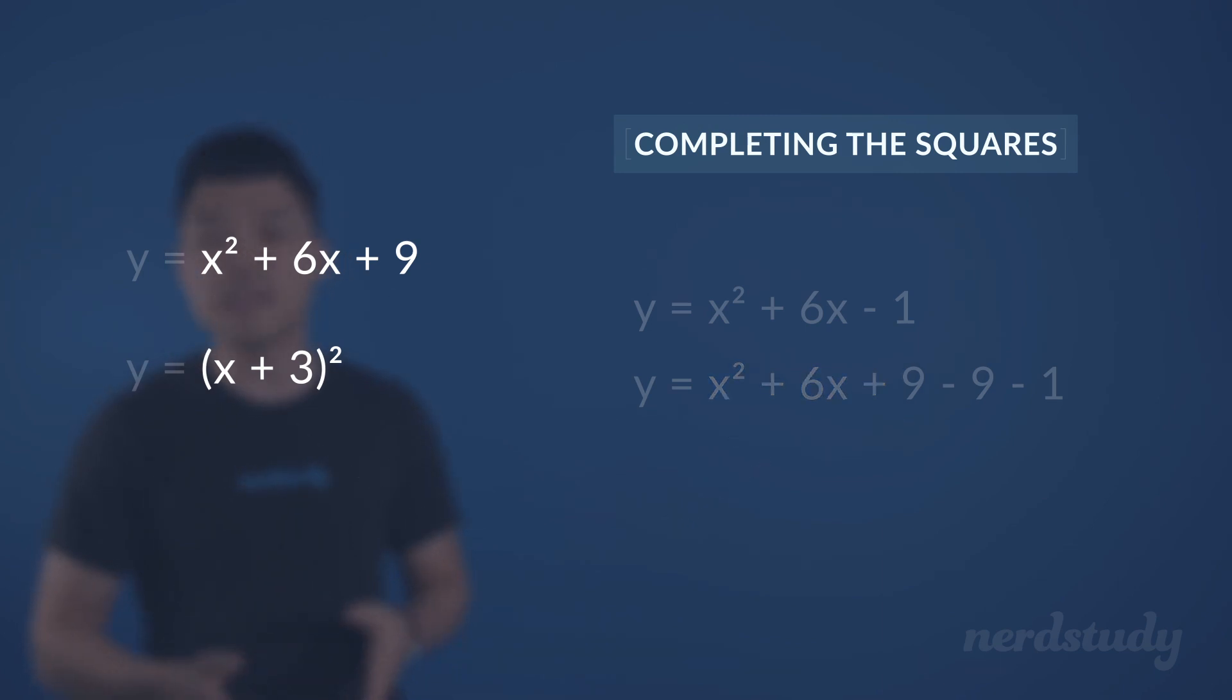So we know the next step can be factored into this, and all we would have to do with the remainder of the equation is just simplify it to get -10. And that's our answer in vertex form.